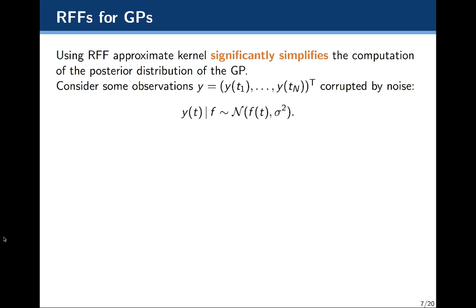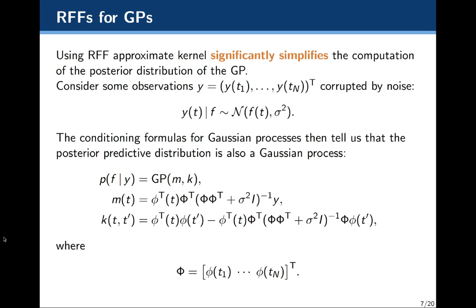Using this RFF approximation, or this approximated kernel, significantly simplifies computation of the posterior distribution of a GP. The conditioning formulas for a GP tell us that the posterior predictive distribution is also a GP given by the formulas below. All we've done is replaced the kernel with the way of writing the kernel according to our feature transformation. Writing capital Phi as the vector concatenated with all of these features — these t's mapped to the feature space — we can recover the mean and kernel functions for the posterior GP.